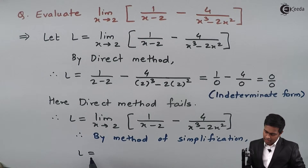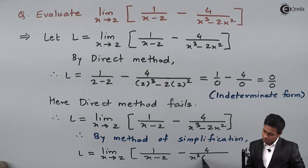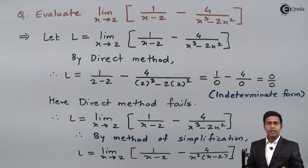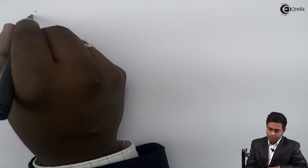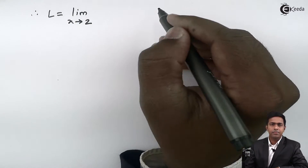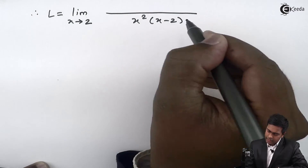By method of simplification, L equals limit x tends to 2 of 1 upon (x minus 2) minus 4 upon x squared times (x minus 2). Taking the LCM of these two terms gives x squared times (x minus 2).